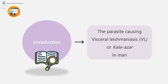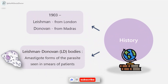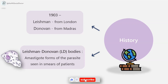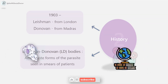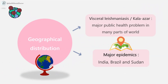History: Sir William Leishman, in the early 1900s, observed the parasite in spleen smears of a soldier who died of dum-dum fever or Kala azar, contracted at Dum Dum, Calcutta. Leishman reported this finding from London in 1903. In the same year, Donovan also reported the same parasite in spleen smears of patients from Madras (present-day Chennai). The parasite was therefore named Leishmania donovani, and the amastigote forms seen in patient smears are called Leishman-Donovan bodies, or LD bodies.